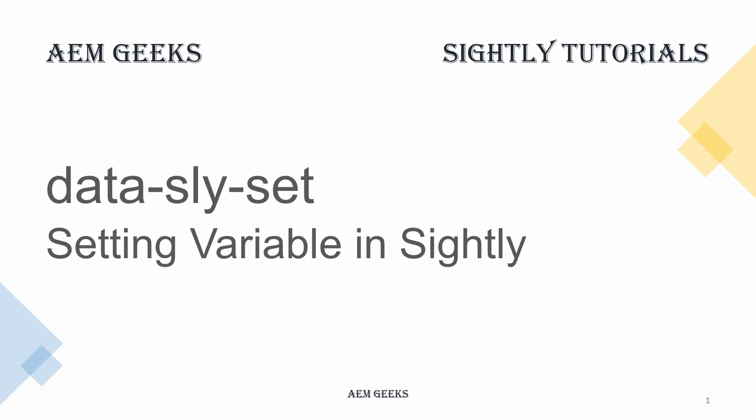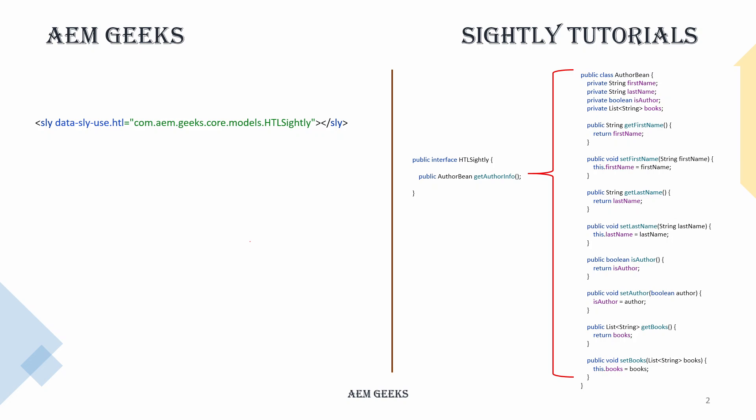In this tutorial I will discuss data-sly-set. When you want an object or variable available throughout your Sightly file, you use data-sly-set to set this variable. To understand how data-sly-set works, let's consider a scenario. I have an author bean and I have a Sling model.